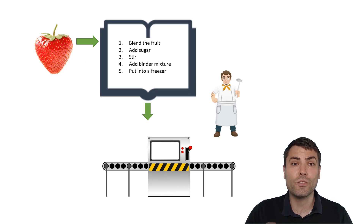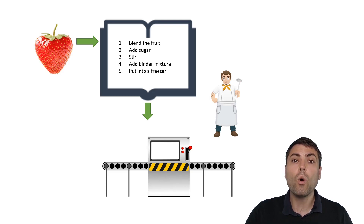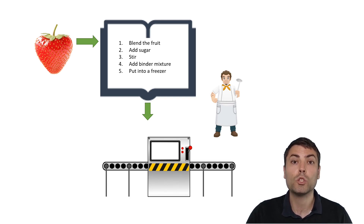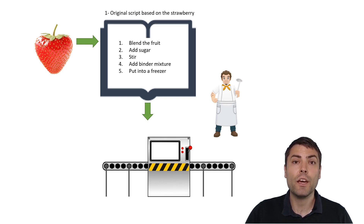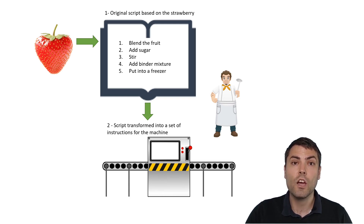So he takes the first fruit, strawberry, and he writes on a piece of paper all the steps that need to be done to make ice cream from the raw strawberry. After he finishes writing the script, he transforms that script into a set of instructions for the machine to follow.